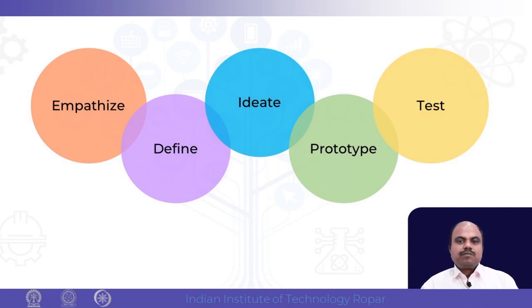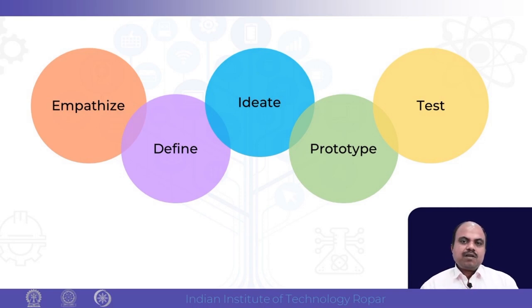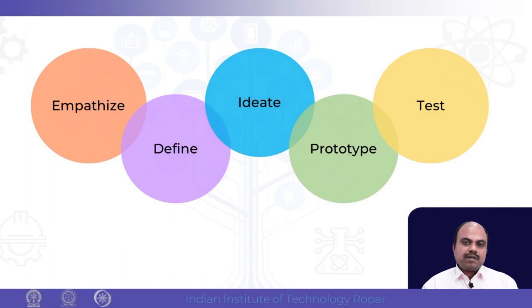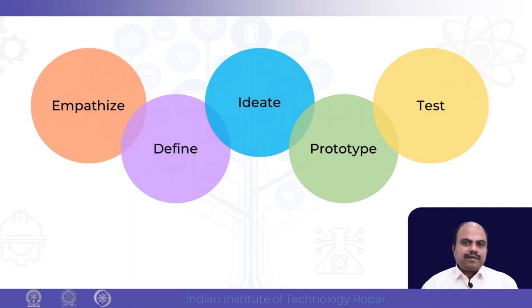Next is Prototype — where we prototype a solution. It may be physical or virtual; it is an actual working prototype that can be tested later on. The last, fifth step is Testing, where we take the prototype, put it in front of the customer and see their reaction, or put it into the system and see how it functions. If not satisfactory, we take it back and repeat the cycle. So: first Empathize, second Define, third Ideate, fourth Prototype, fifth Testing — these five steps are generally followed in many companies.